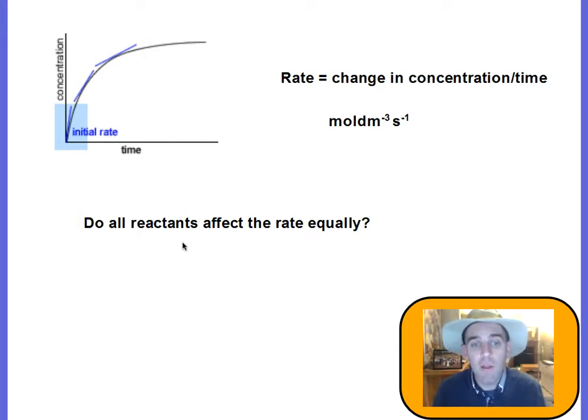We can compare these initial rates of reactions to see if the concentration changes the initial rate. We look at initial rate in particular because we always know the concentration of the reactants at t equals zero. Now a rate equation looks at how the reactants affect the rate, and we can see if they all affect it equally.